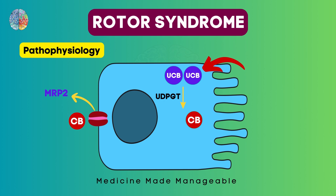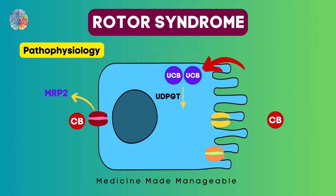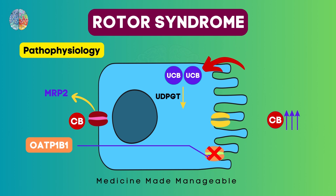Some of the conjugated bilirubin actually goes back to the portal circulation through different channels. This conjugated bilirubin then comes back into the hepatocyte through a channel called OATP1B1. Now in Rotor syndrome, this channel is defective. Due to this, the conjugated bilirubin will not be able to go back into the hepatocyte and will start to increase in the blood.